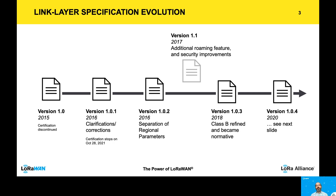At the end of 2020 we published version 1.0.4, and in the next slide I will be talking about the new things that came along with this version. Those of you following our spec development closely would know that back in 2017 we also published version 1.1, which came with fundamental new features such as additional types of roaming and some security improvements. Seeing that the industry did not make the jump to version 1.1 and was still building products based on the 1.0 series, we went back and imported some of the new developments from 1.1 back into the 1.0 series, which brought us all the way to 1.0.4. Moving forward, 1.0.4 is the last version of the 1.0 series and now we are going back to building our specification based on the 1.1 series.